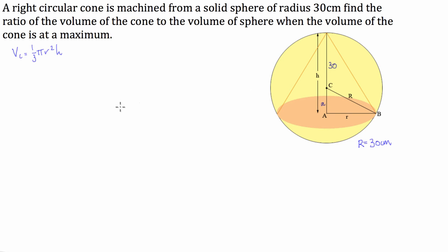What we have to do is get the volume of the cone in terms of one variable. We're going to use the relationship between the radius and the other two sides of this triangle to get everything in terms of height. The height of this cone is going to be equal to the radius of the sphere, which is 30, plus A.